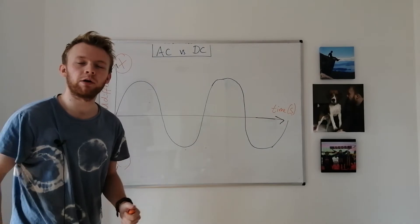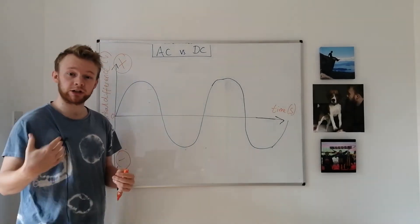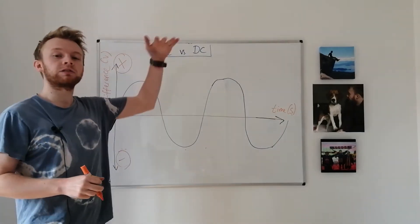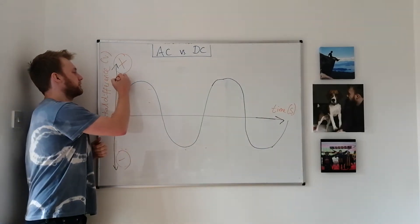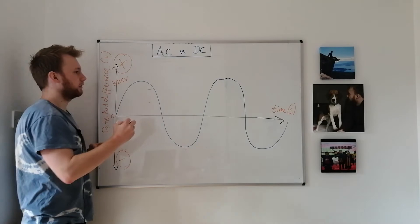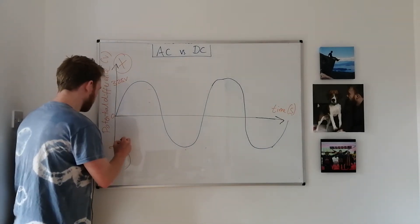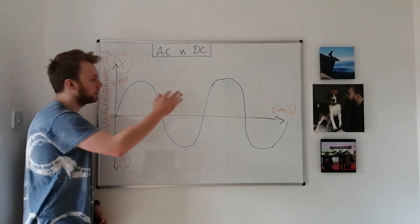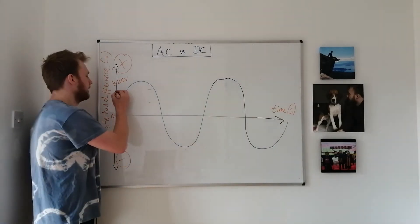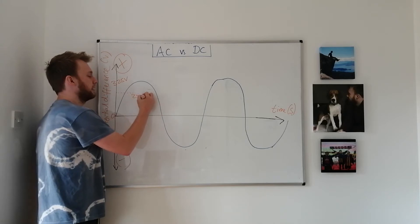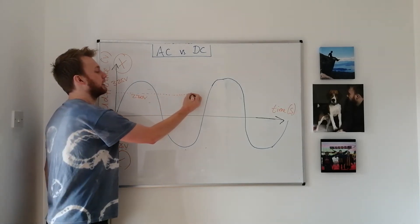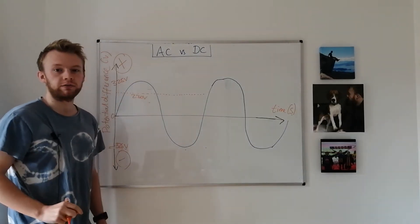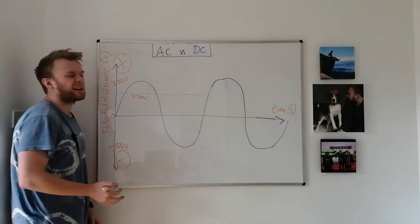So with an alternating current we also get an alternating potential difference. A changing potential difference in the circuit. In the UK the maximum positive voltage is 325 volts and the maximum negative voltage is minus 325 volts. We call that the peak voltage. And on average across the whole time this averages out to be a mean of 230 volts. So we say that the alternating current in this country has like a direct current equivalent of being 230 volts. Sometimes it's more than that, sometimes it's less than that, but that's on average.